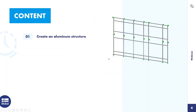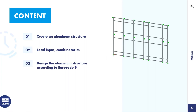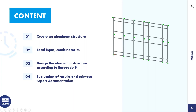Regarding the agenda today: the first point is the creation of an aluminum structure, such as a facade structure on the right side of the screen — that's the model today. After the creation, we'll cover the load input and the combinatorics. Then Sonja will do the design of the structure according to Eurocode 9, the evaluation of results, and the documentation in the printout report. Then I hand over the screen to Sonja so she can start.